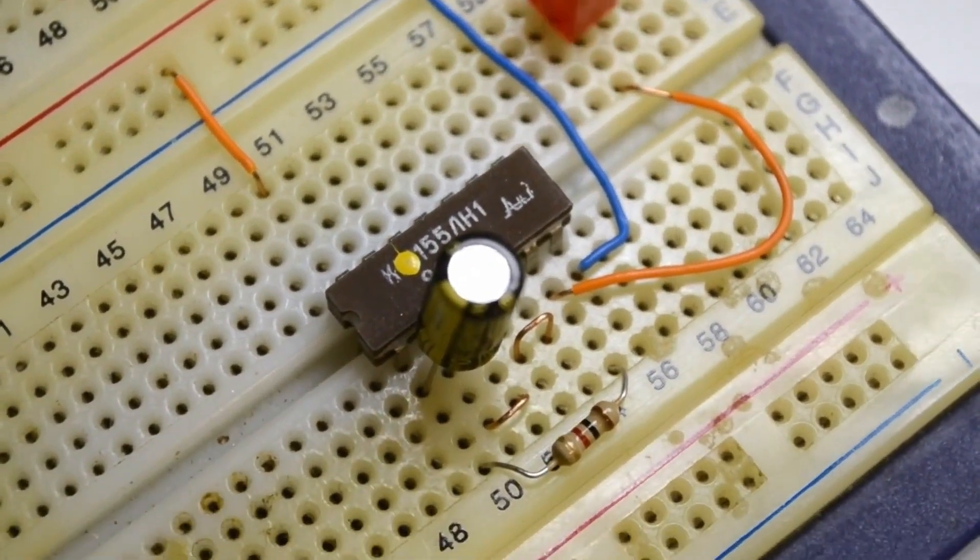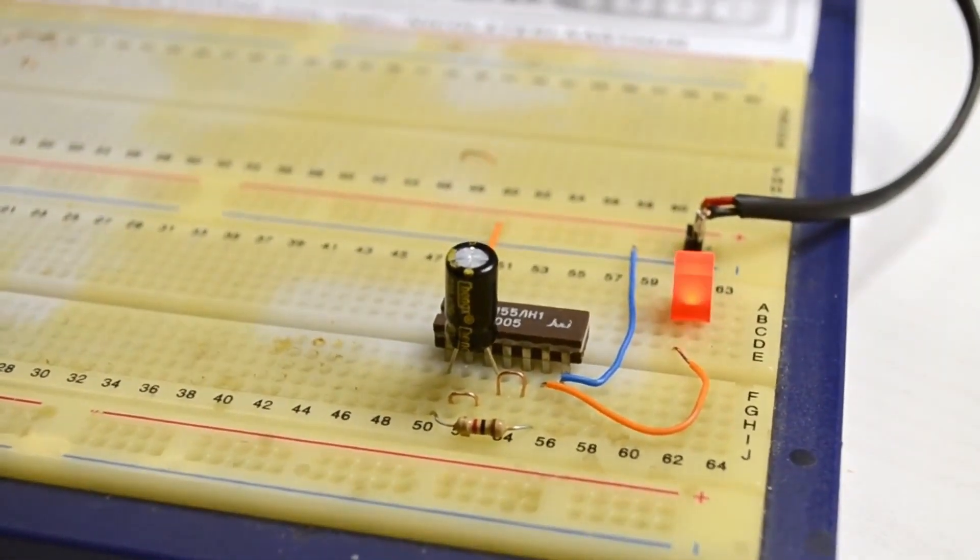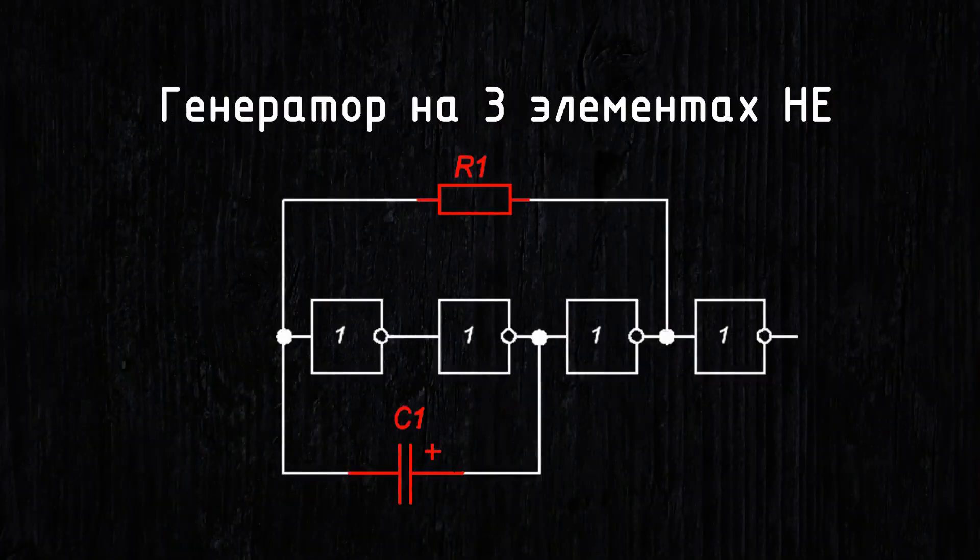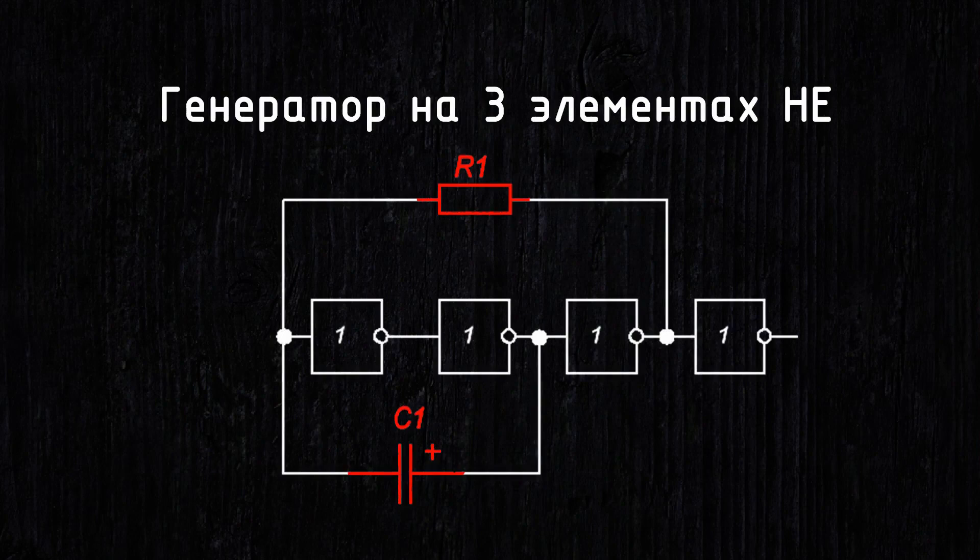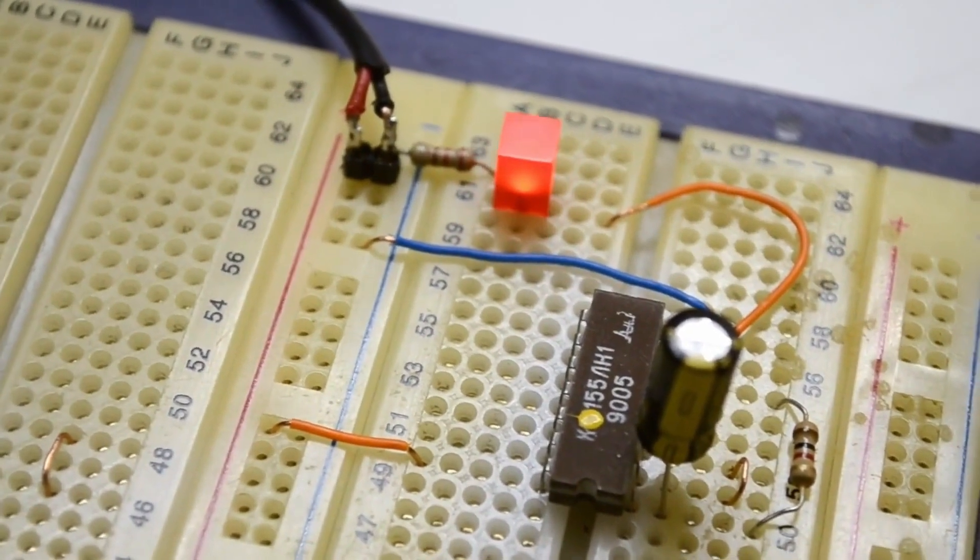Well, adjusting the frequency requires an oscilloscope or a frequency meter, because it involves selecting the resistance and capacitance, RC circuits. For testing the functionality of such simple circuits, it's convenient to use breadboards.